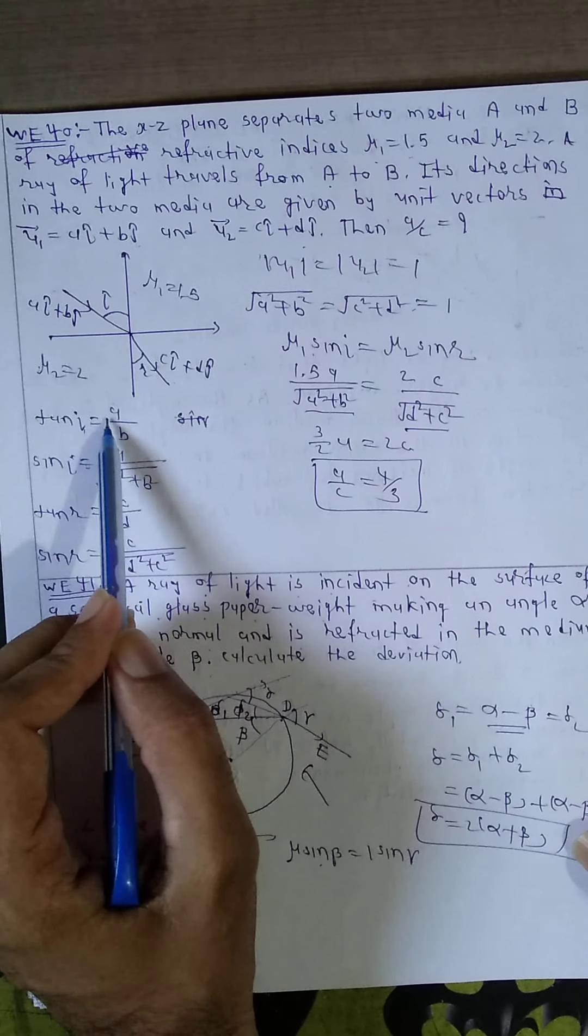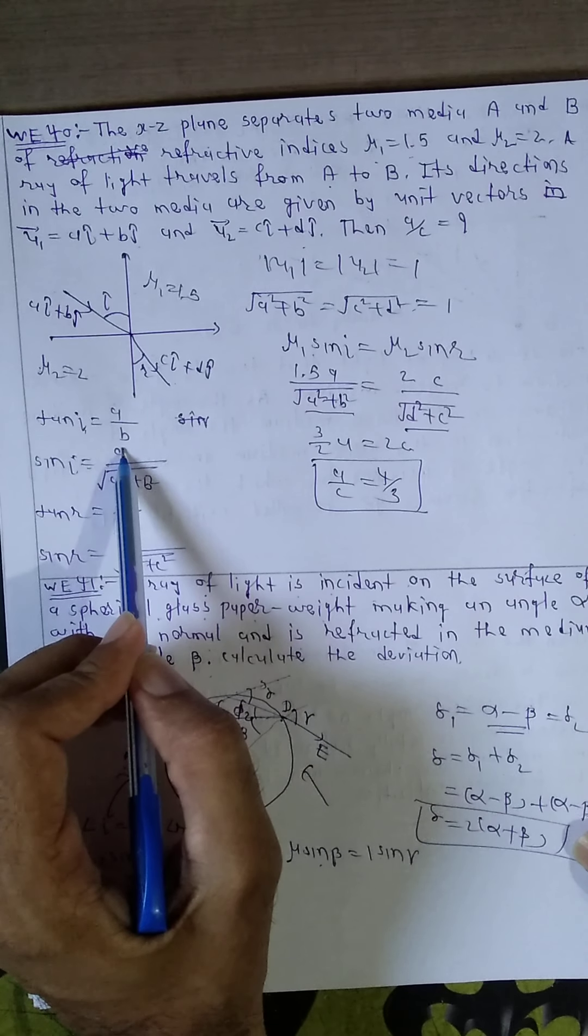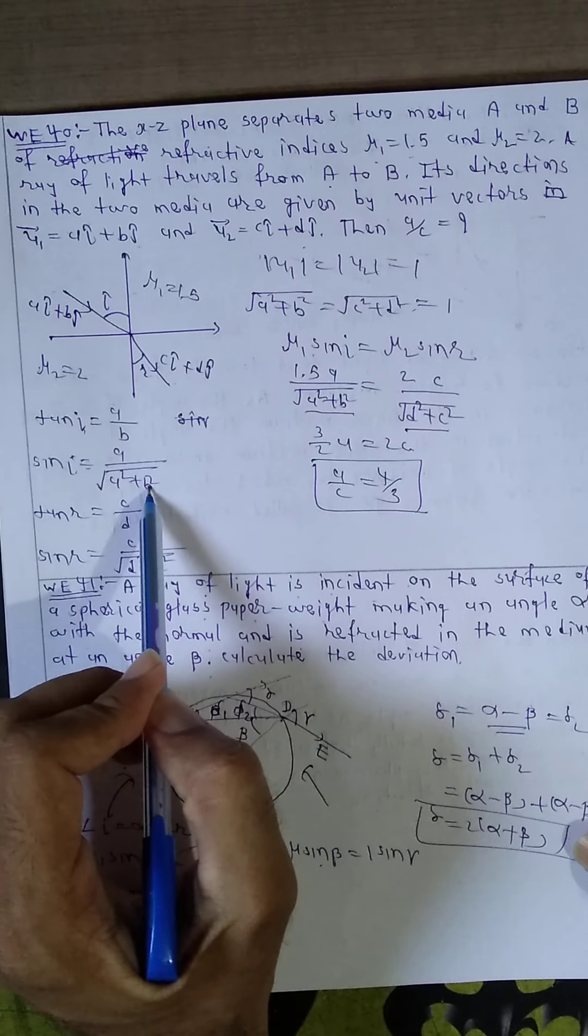Therefore, sin i equal to a upon under root a square plus b square.